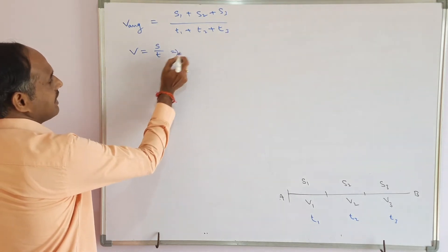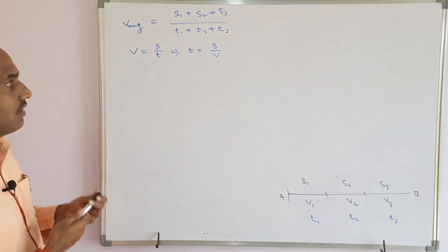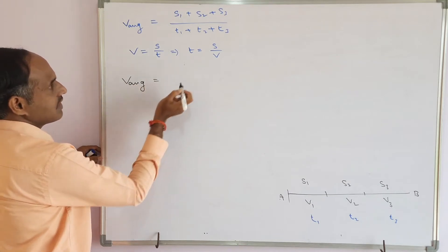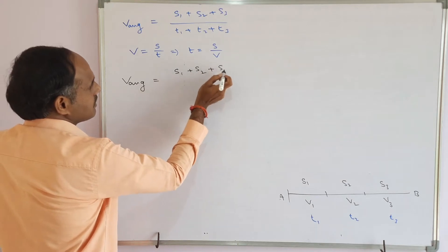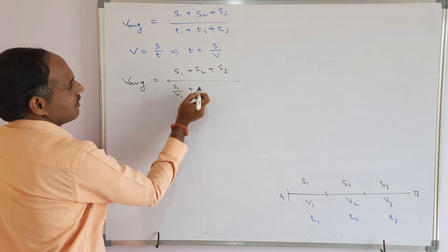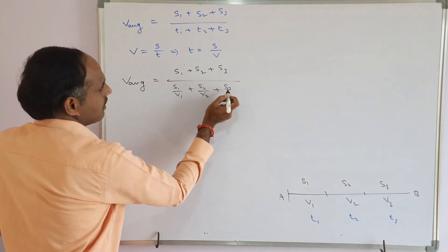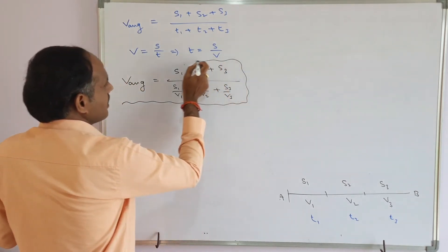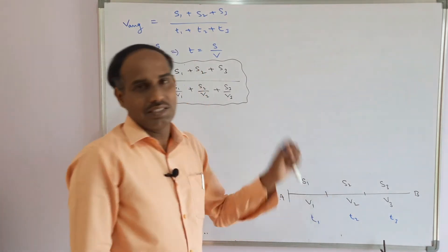Since time intervals are not given, we replace them using the basic relation: speed = distance / time, which gives time = distance / speed. Therefore, average speed = (s1 + s2 + s3) / (s1/v1 + s2/v2 + s3/v3). This expresses average speed in terms of distances and speeds only.